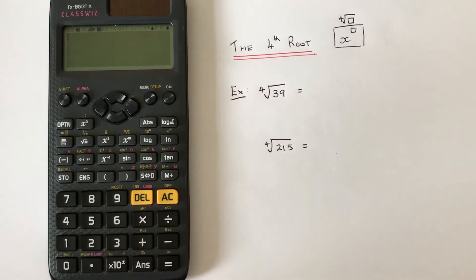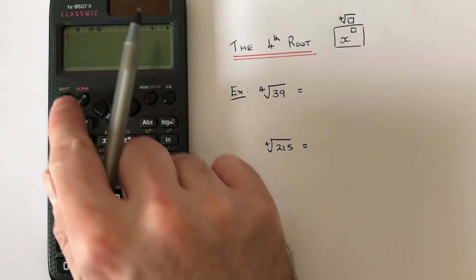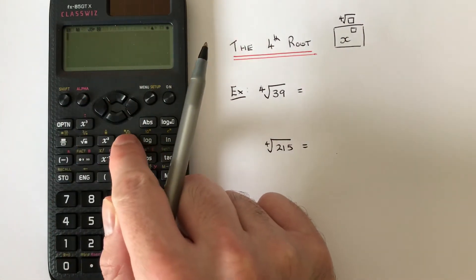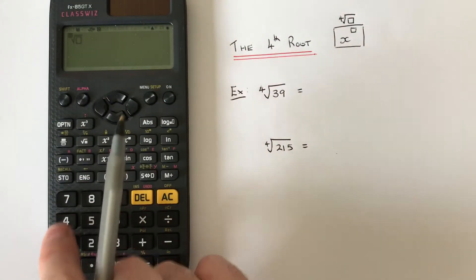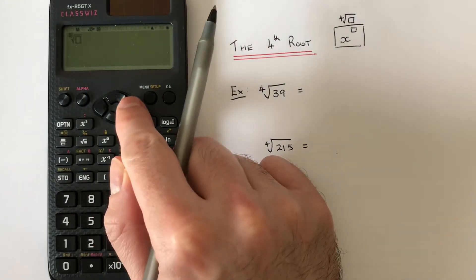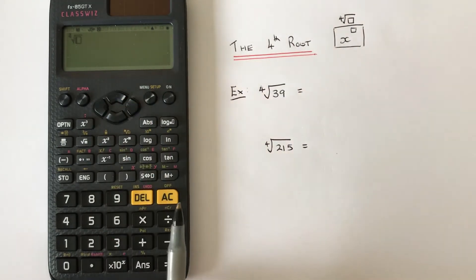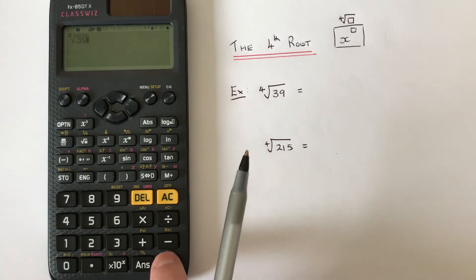That we have here. So we've got to do the fourth root of 39. So if we press shift, x to the power, OK, so we need to type 4 on the root, then press the right key, and then type in 39. Hit the equals.